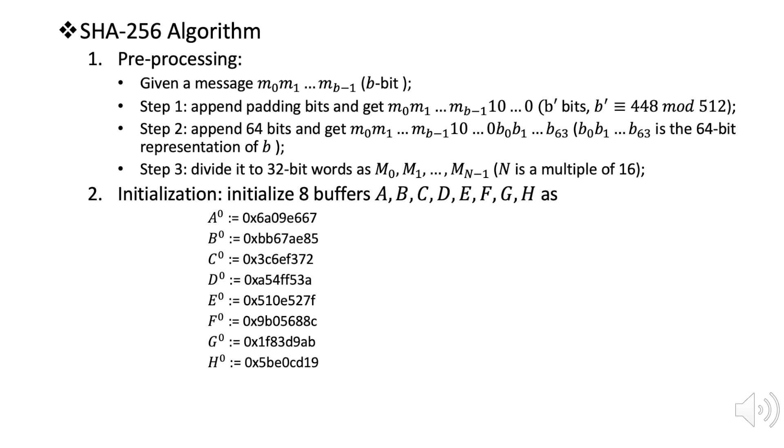This algorithm is used in both the mining process and the generation of Bitcoin addresses. The SHA-256 algorithm is actually a hash function which takes an arbitrary length message and outputs a fixed length, which is 256 bits, hash value.